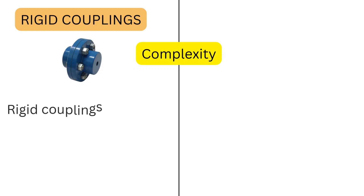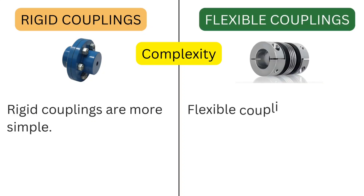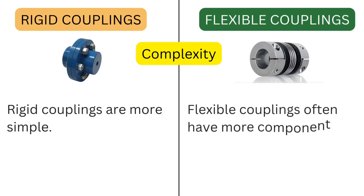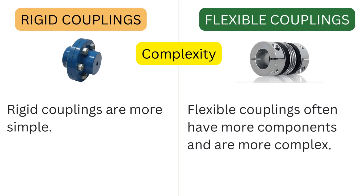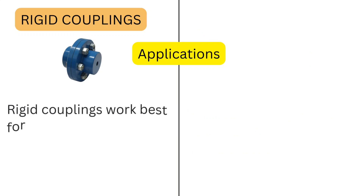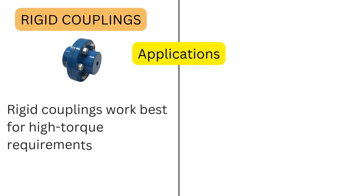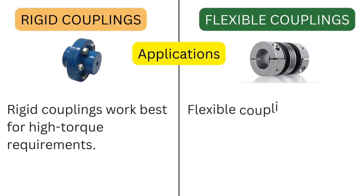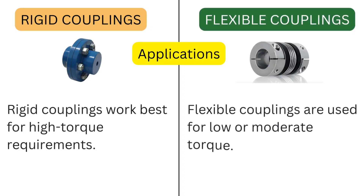Comparing complexity and torque: Rigid couplings are more simple in design. Flexible couplings often have more components and are more complex. For torque requirements, rigid couplings work best for high torque applications, while flexible couplings are used for low or moderate torque.